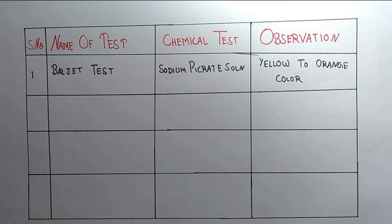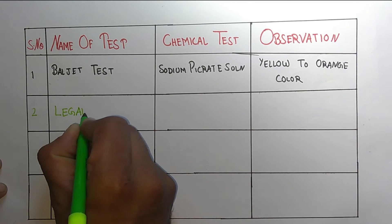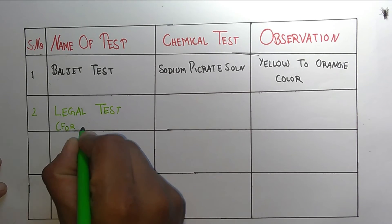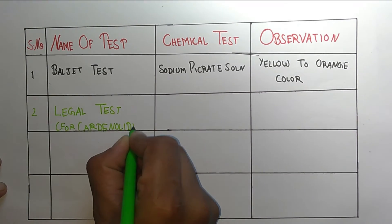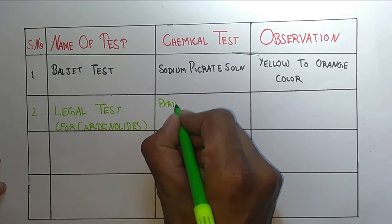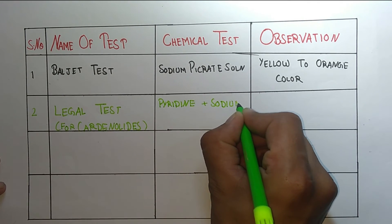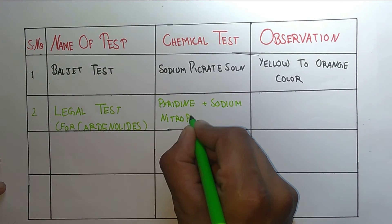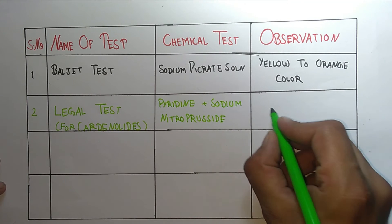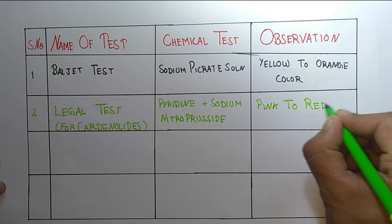The second test is the Legal test, which is specifically for cardinolides. The procedure uses pyridine plus sodium nitroprusside. The observation is a pink to red color.